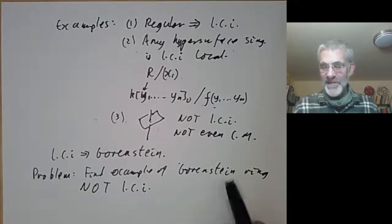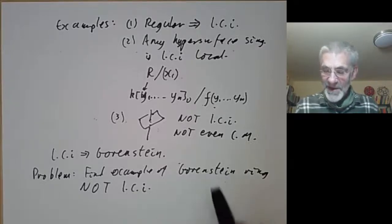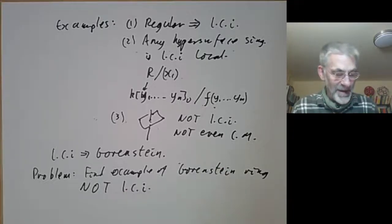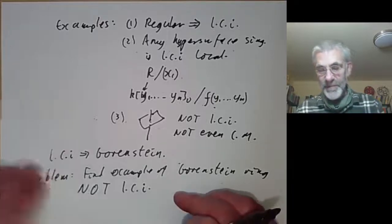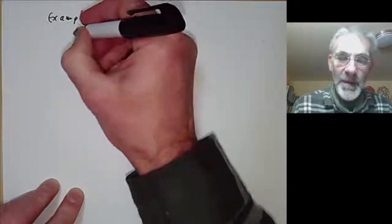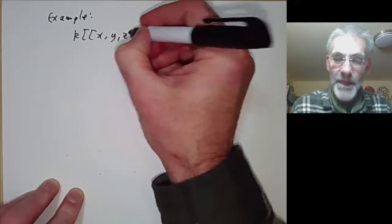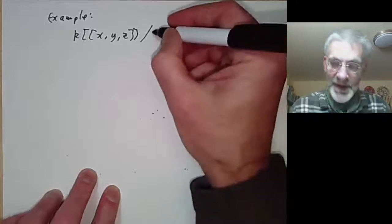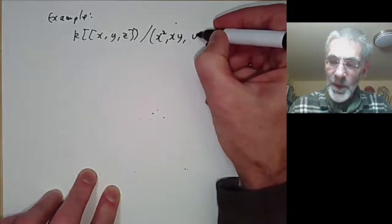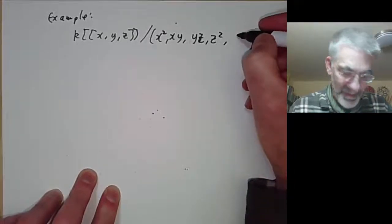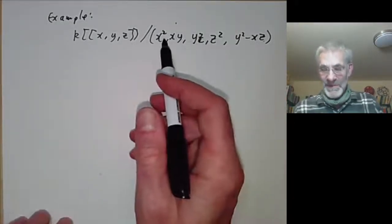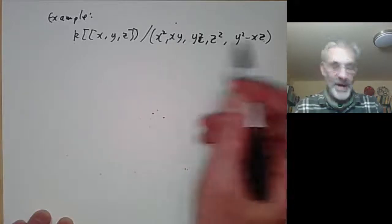So I'm going to give an example of a ring that is Gorenstein but not a local complete intersection, and we're going to check both conditions. The example is the following ring: we take the ring of polynomials in three variables and quotient it out by the ideal generated by x², xy, yz, z², and y² − xz. You see what I mean by the fact that these examples aren't completely obvious — you really have to think about it a bit to come up with examples like this.